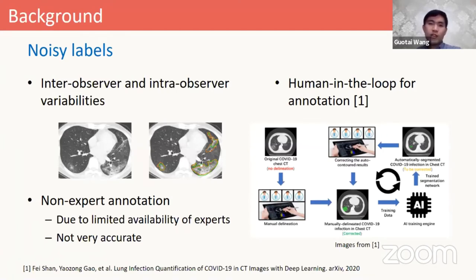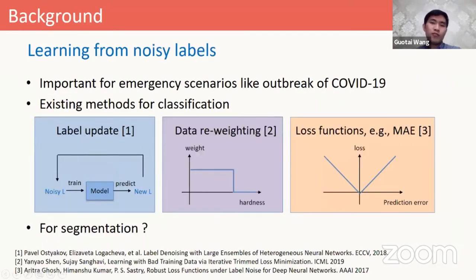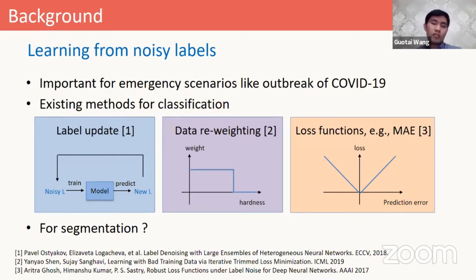Theoretically, neural networks can fit any data. So if the labels are noisy, the neural networks may fit the noise and the performance will be decreased. So in order to get a good result, we need to find some strategies to improve the robustness against the noisy labels.